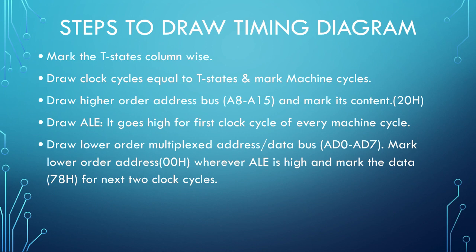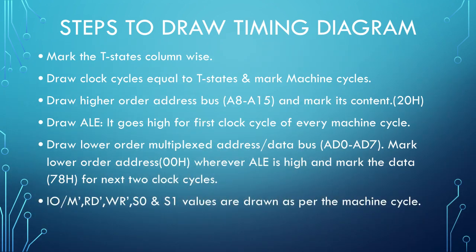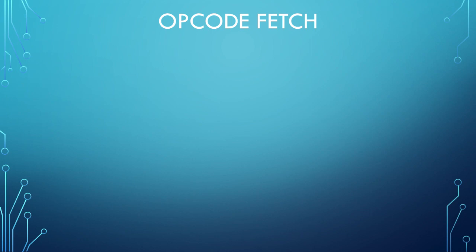After that, draw the lower order multiplexed address-data bus AD0 to AD7, which will contain address when ALE is high, and for the remaining clock cycles it will contain data. For this particular example, address is 00H and data is 78H. Lastly, we have to draw the control signals IOM bar, read bar, write bar and status signals S0 and S1. We will take timing diagrams of specific machine cycles and in the second part we will take certain examples for drawing timing diagrams.